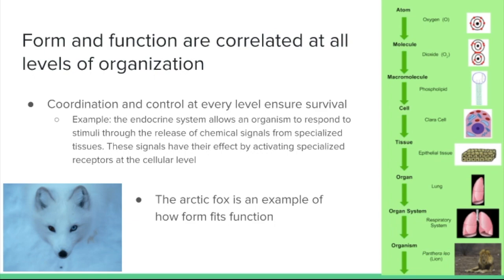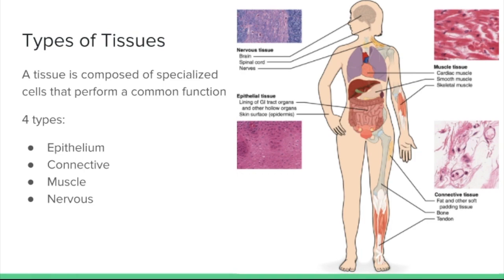And so again, form fits function. In animal body systems you have four main types of tissues that we will look at today: epithelium, connective tissue, muscle tissue, and nervous tissue. Epithelium is going to be really important for the lining of organs and for protecting surfaces like the skin, for example, or the lining of your esophagus, lining of your digestive tract. Connective tissue can be subdivided into a variety of categories like blood and bone and cartilage.